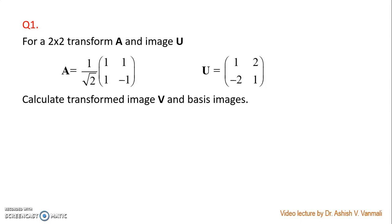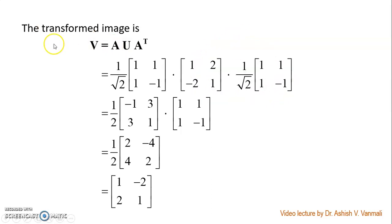Consider this problem. For a 2x2 transform A and image U, calculate the transformed image B and basis images. They have given us the transformation matrix A and this is our input image. The standard formula for transform image B is A U A transpose, where U is our input image, A is the transformation matrix, and B will be the transform image. It is simple substitution that we have to perform.